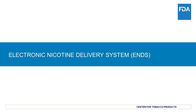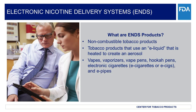Next, we will review electronic nicotine delivery systems, also referred to as ENDS products. ENDS are non-combustible tobacco products. These products use an e-liquid that may contain nicotine, as well as varying compositions of flavorings, propylene glycol, vegetable glycerin, and other ingredients. The liquid is heated to create an aerosol that the user inhales. ENDS include devices such as vapes, vaporizers, vape pens, hookah pens, electronic cigarettes, e-cigarettes or e-cigs, and e-pipes. ENDS also include components and/or parts such as e-liquids, cartridges, atomizers, and batteries.